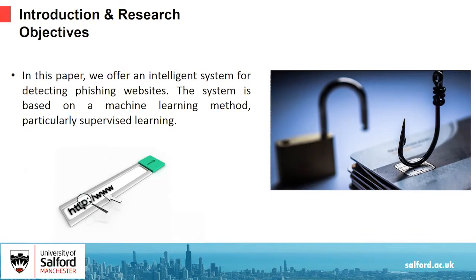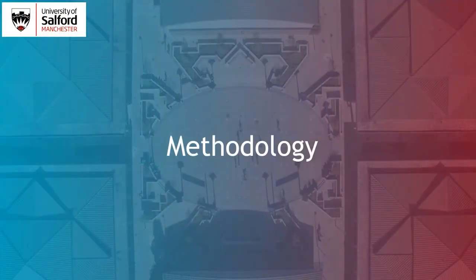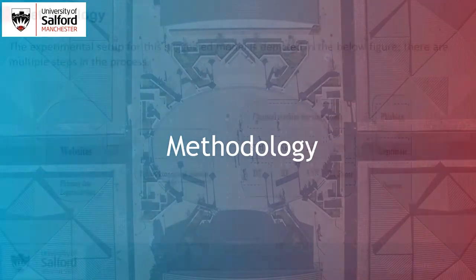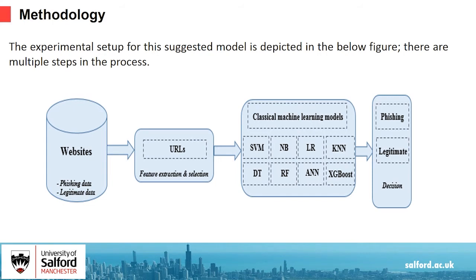In this paper we offer an intelligent system for detecting phishing websites. The system is based on a machine learning method, particularly supervised learning. This section details the proposed framework of phishing detection using URL features based on website properties. Feature selection techniques, selected datasets, ML algorithms, and performance evaluation measures are applied in experimenting with this proposal. The experimental setup for this suggested model is depicted in Figure 2.